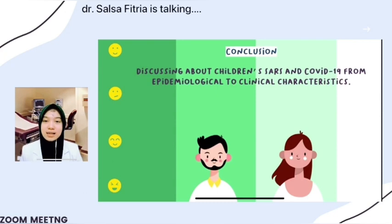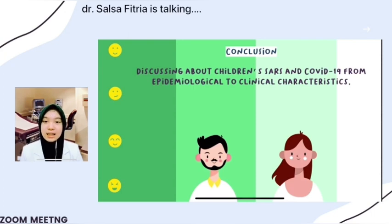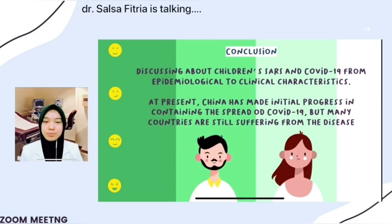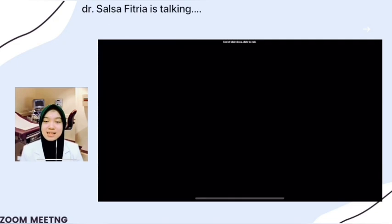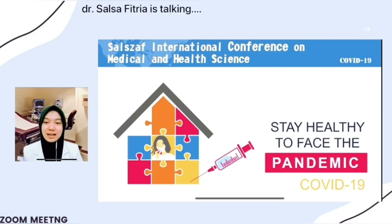In conclusion, discussing children's SARS and COVID-19 from epidemiological to clinical characteristics, there are limited data on children with COVID-19. There is an urgent need to define the clinical characteristics and severity of disease, especially in countries that lack pediatric patient data. At present, China has made initial progress in containing the spread of COVID-19, but many countries are still suffering from the disease. This is the end of my presentation. I apologize for any mistakes, whether intentional or not. Thanks for your attention.